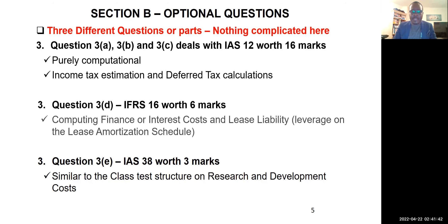Question 3 — a, b, and c — deals with IAS 12 and is worth 16 marks. It is purely computational with no narrative. We're looking at income tax estimation and deferred tax calculation, which we've covered extensively in class. Master these and when you see them in the exam they should flow easily. Question 3d deals with IFRS 16 and is worth 6 marks.